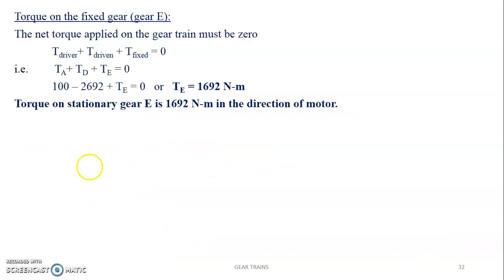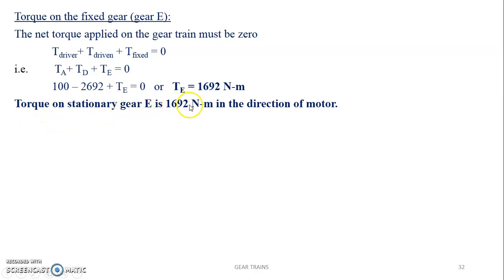Now we calculate the torque on the fixed gear E. Using the net torque expression — torque on driver (gear A) plus torque on driven (gear D) plus torque on fixed gear (gear E) equals zero — and substituting the known values, we get the torque on gear E as 1692 newton meters. Since this value is positive, the torque on the stationary gear E is 1692 Nm in the direction of the motor.